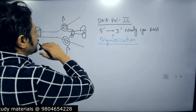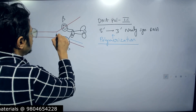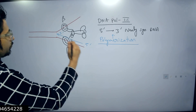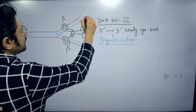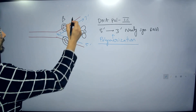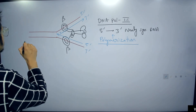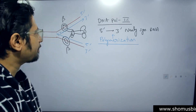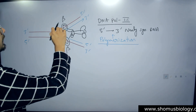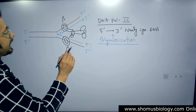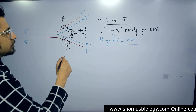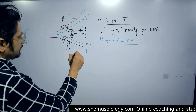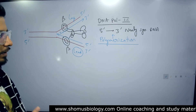The direction of polymerization is 5 prime to 3 prime. One strand has a 5 prime to 3 prime direction one way, and the other strand has a 5 prime to 3 prime direction the other way, because in the original DNA the strands are complementary and antiparallel. The strand where continuous synthesis is done by DNA Polymerase 3 is known as the leading strand, and the strand where synthesis is discontinuous is known as the lagging strand.